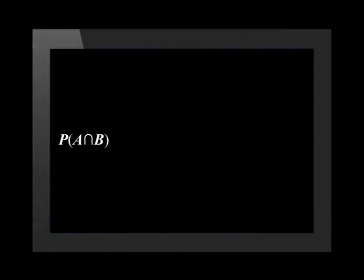The first example we will look at uses independent events. Remember, with independent events, the probability of the second event is not influenced by the probability or the occurrence of the first event. Also remember that for independent events A and B, the probability of A and B is equal to the probability of A times the probability of B.